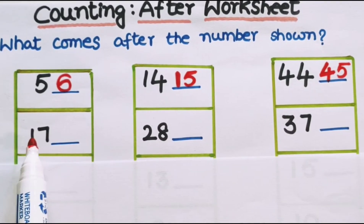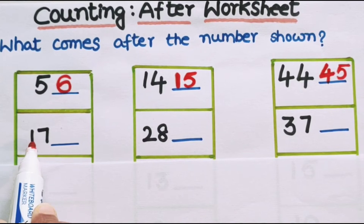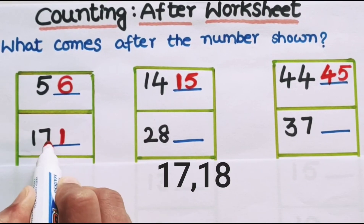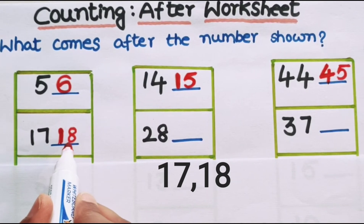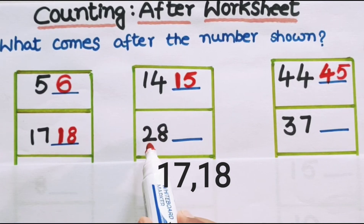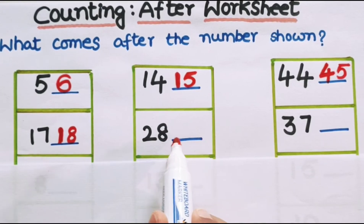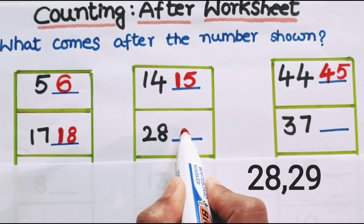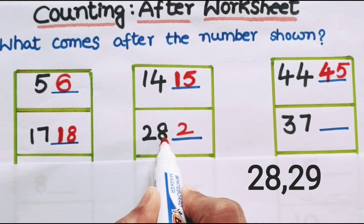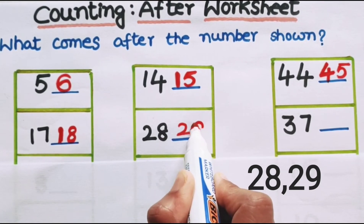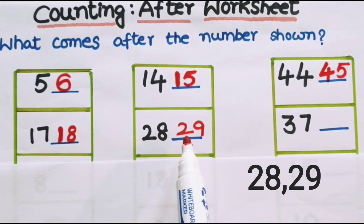What is the next number? It is 17. After 17, what number comes? Look at the tens place — it is 1, so we write 1 as it is. After 7, 8 comes, so after 17, 18 comes. Next, the number given is 28. After 28, what number comes? The tens place is 2, the ones place is 8, and after 8 comes 9. So after 28, 29 comes.